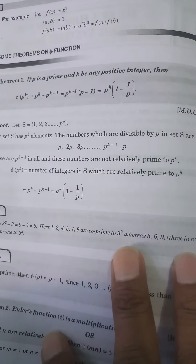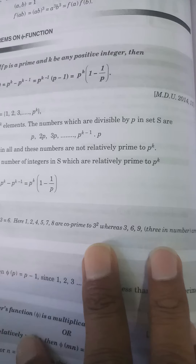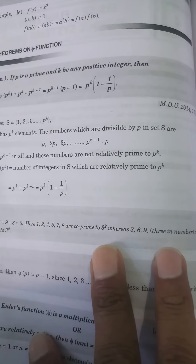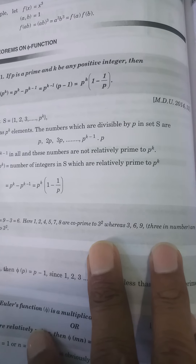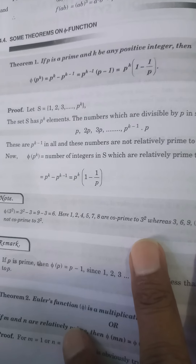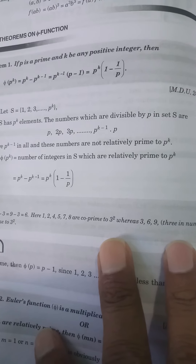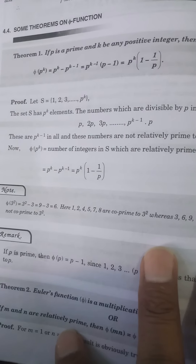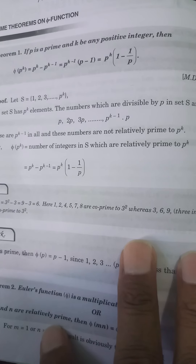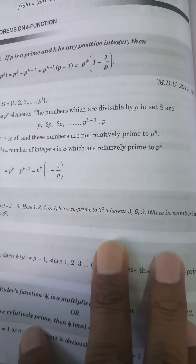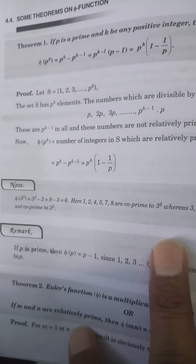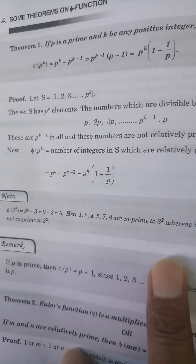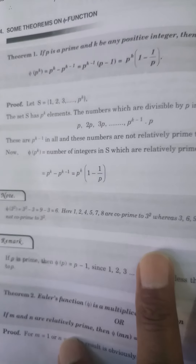The set S has p^k elements. The numbers which are divisible by p in the set are multiples of p: p, 2p, 3p, ..., (p^(k−1))·p. These are p^(k−1) in all, and these numbers are not relatively prime to p^k. Now, phi(p^k) equals the number of integers in S which are relatively prime to p^k, which equals p^k − p^(k−1).